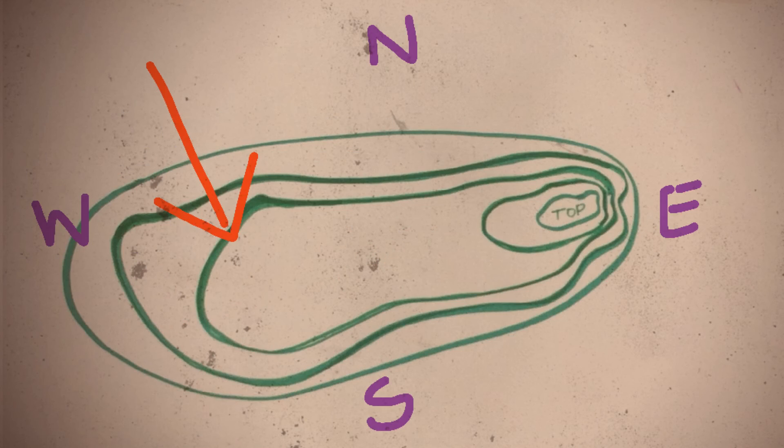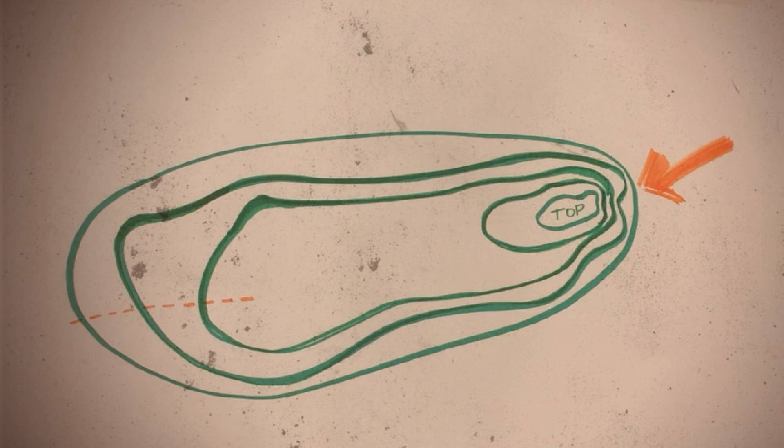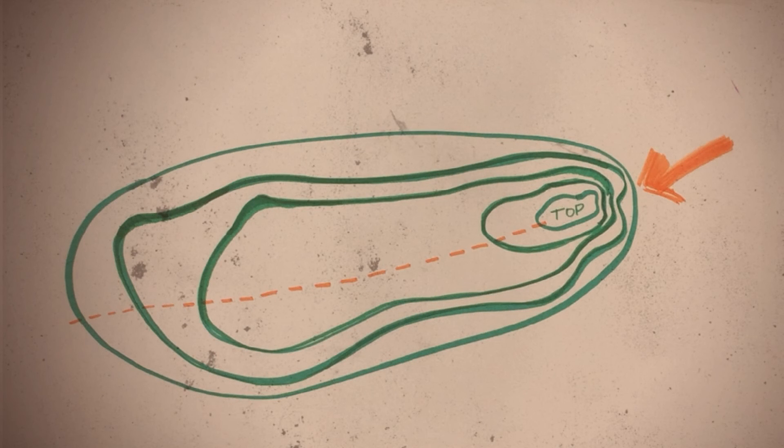In this model, the contour interval on the west side of the map is the same as the contour interval on the east side. The lines are just spaced differently. That's because they show the different slope of the land. Gradual and steep.